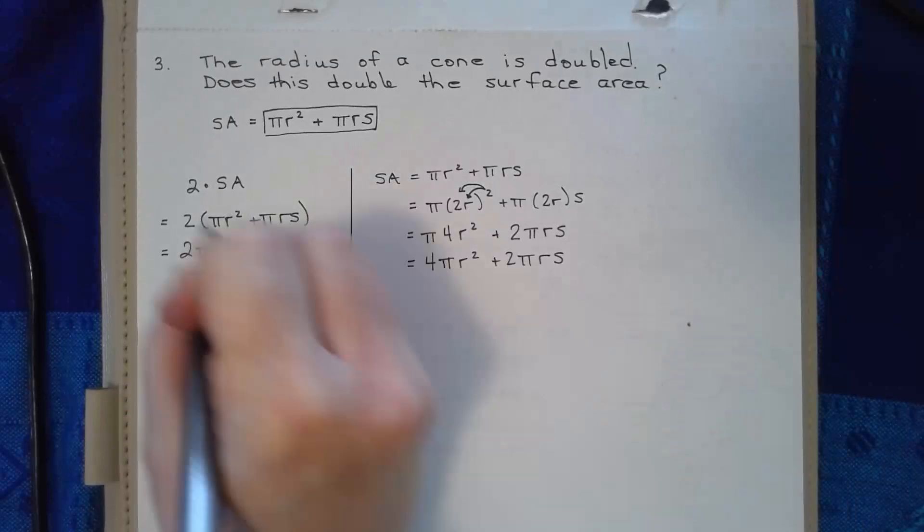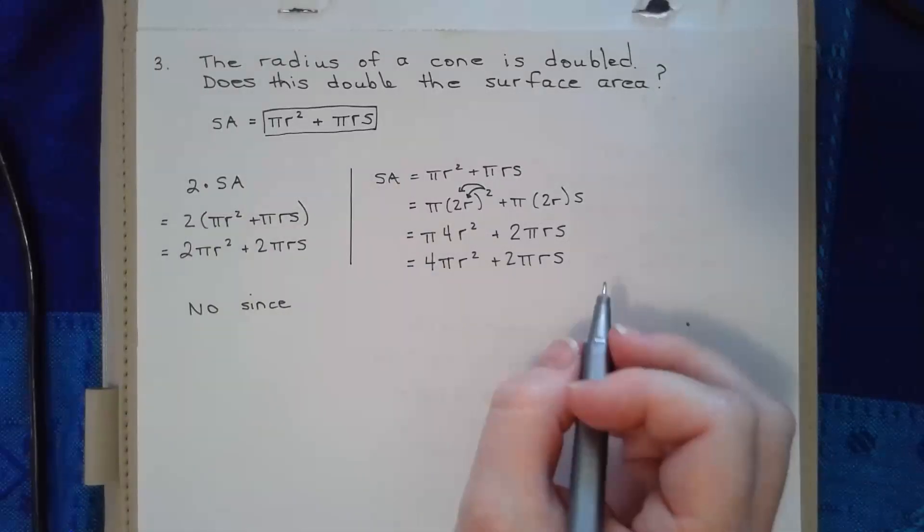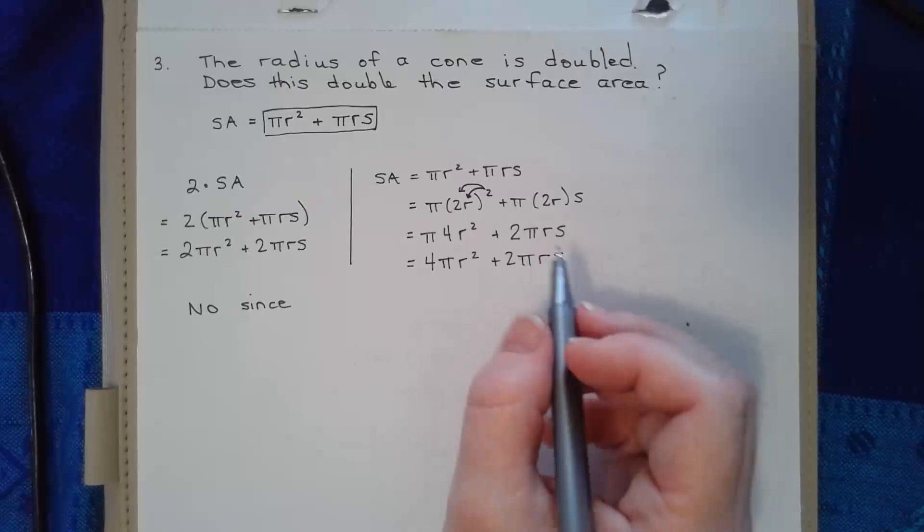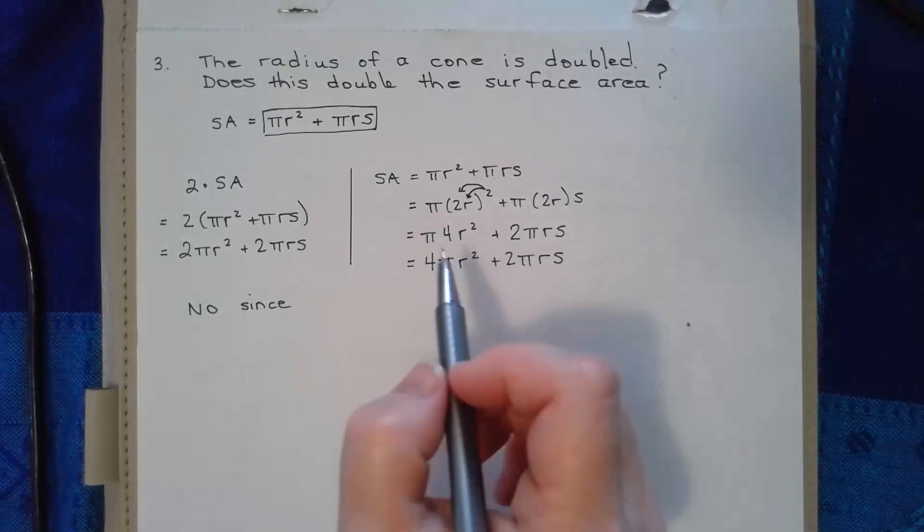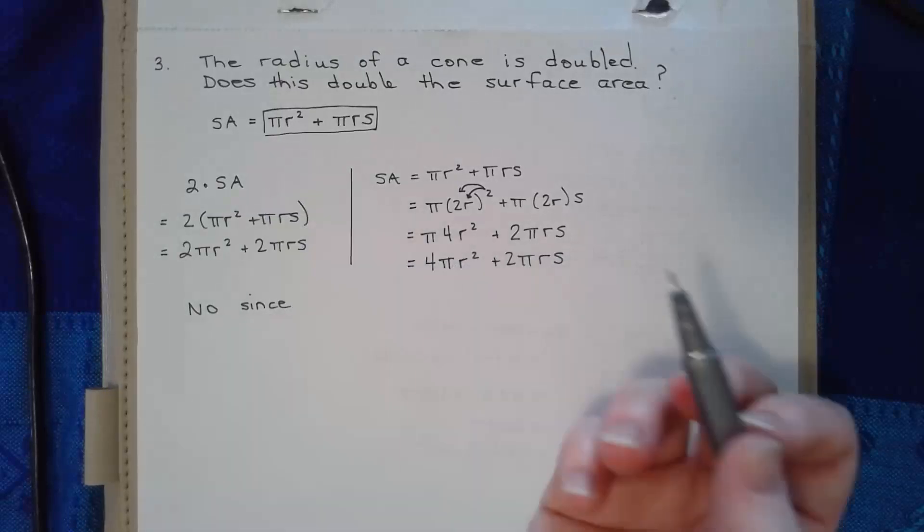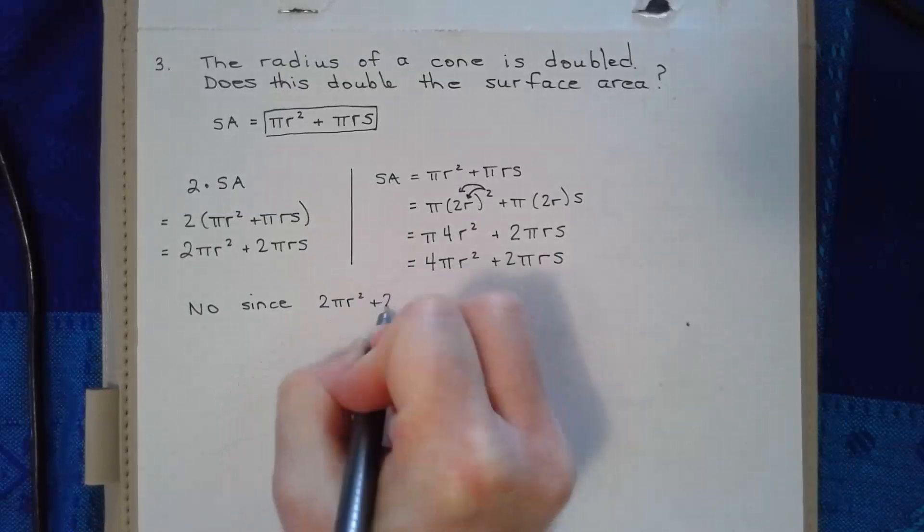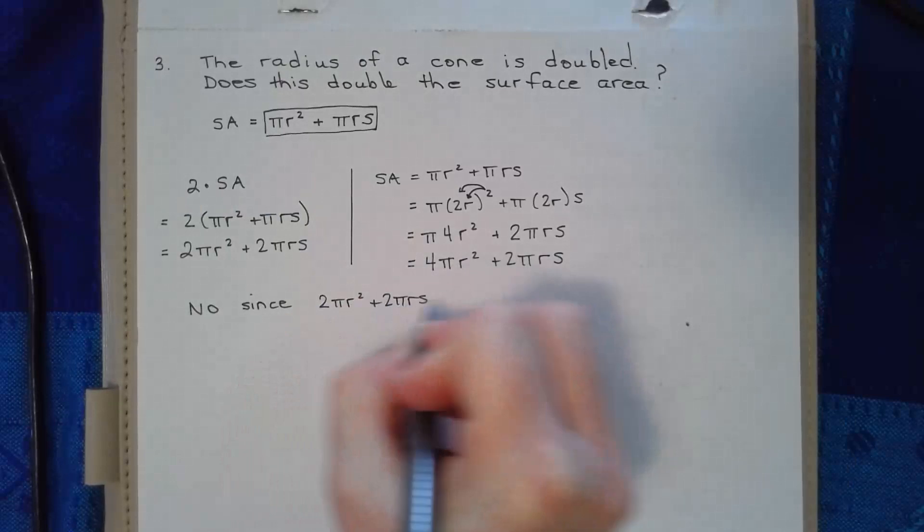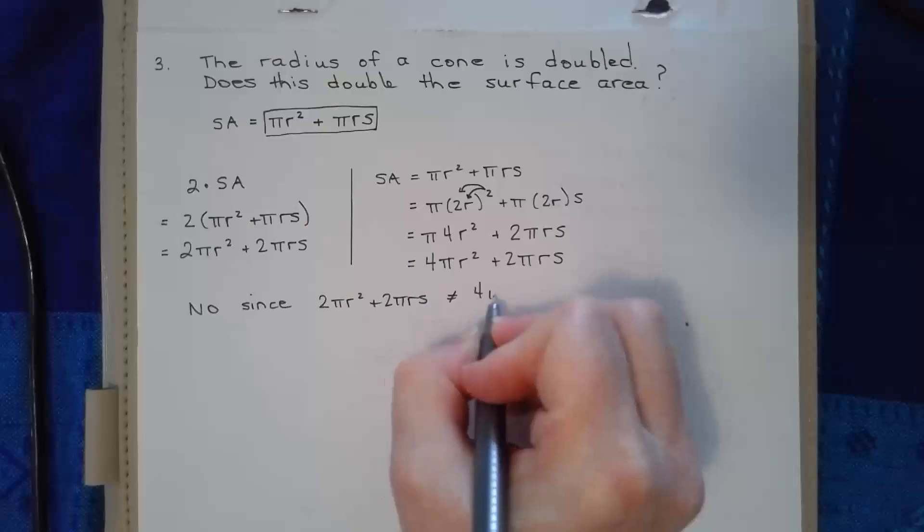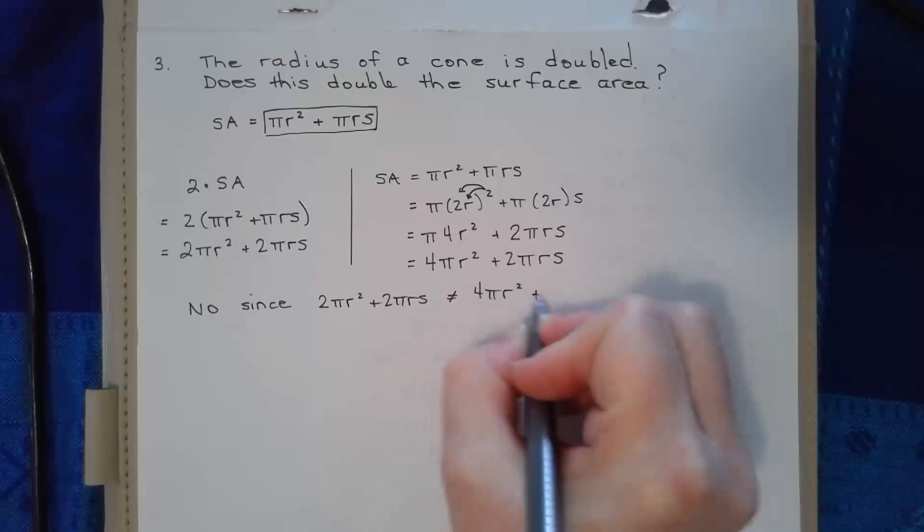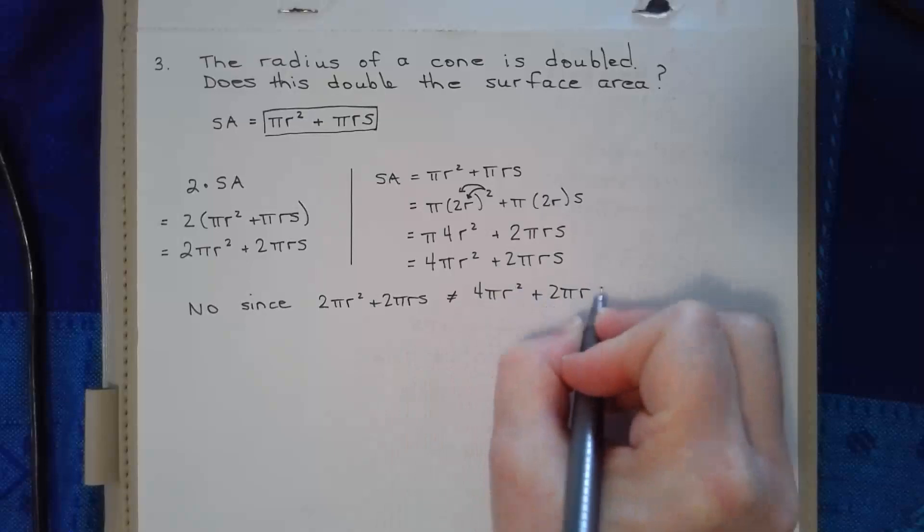So double the surface area does not equal the surface area of doubling the radius. Doubling the radius does not double the surface area since two pi r squared plus two pi r s is not equal to four pi r squared plus two pi r s. Hope that helps.